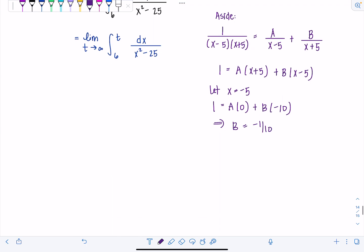And then to solve for A, similarly, I'm just going to let x equal positive 5. That would give me 1 equals, I'm substituting that into here, 1 is equal to A times 10 plus B times 0. And then we can see that means A is equal to positive 1 over 10.